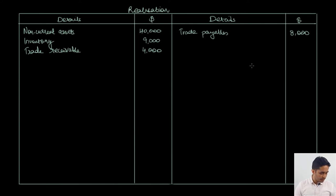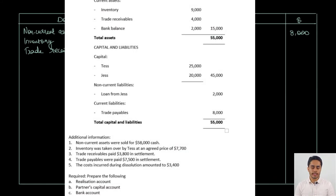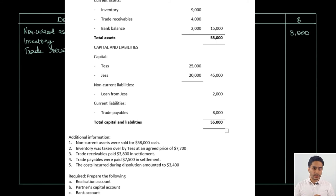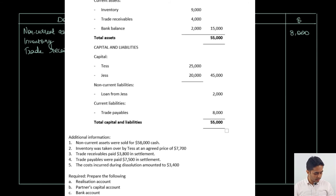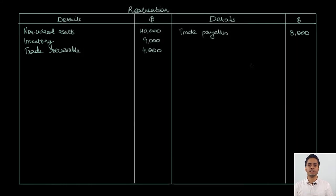We have transferred the book values of assets and liabilities. Now let's look at the additional information. The non-current assets were sold for 58,000 cash — this goes on the credit side as bank, 58,000. The inventory was taken over by Tess at an agreed price of 7,700, which goes on the credit side as Tess's capital (inventory), 7,700. The trade receivables realized 3,800, which also goes on the credit side as bank (trade receivables collected).